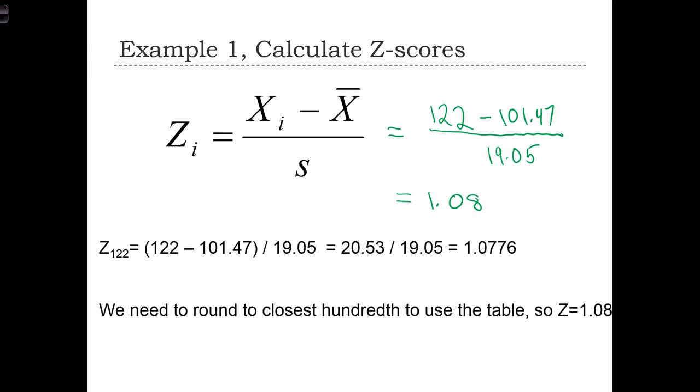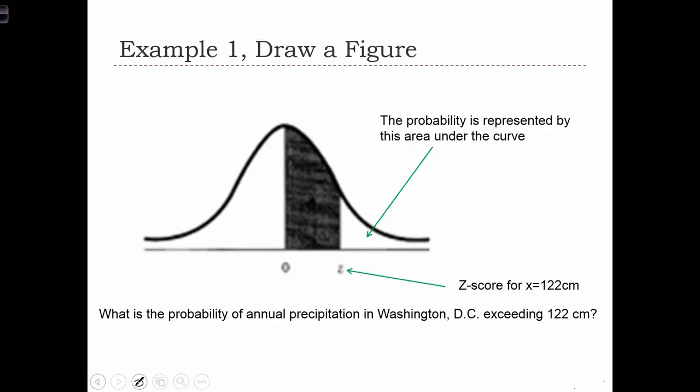Now we can use our table to find the probability between 0 and 1.08. Recall that the table gives us these probabilities between 0, and we're going to look up this value at 1.08. That's going to give us this probability over here. What we're actually looking for is this probability in here. So we're going to take 50% and subtract this probability from the table.